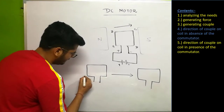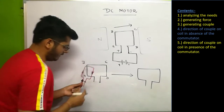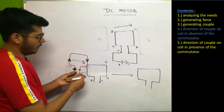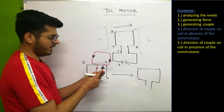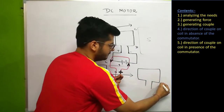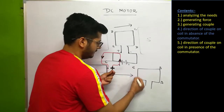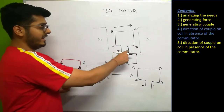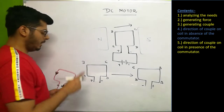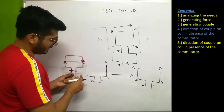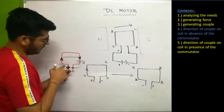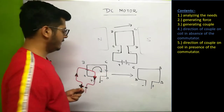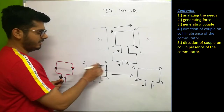We have this coil with arms A, B, C, D. A is connected with the positive side, so this is the positive end and the other is the negative end. In the arm AB, the current is upward. Using Fleming's left-hand rule — magnetic field in this direction, current in this direction — force on arm AB is downward. In arm CD, the current is downward, so the magnetic force acts upward.